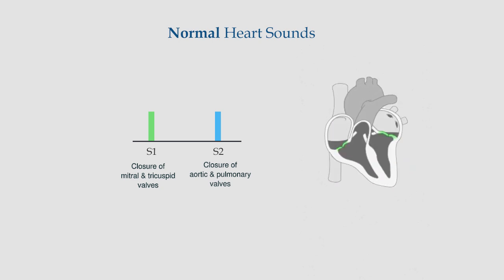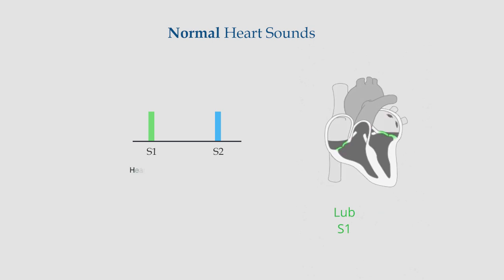The cadence of these two sounds is lube-dub. Lube is S1 and dub is S2. The first heart sound is best heard in the apical area.